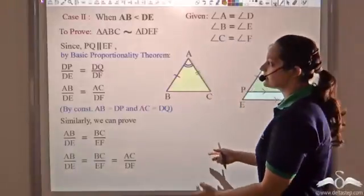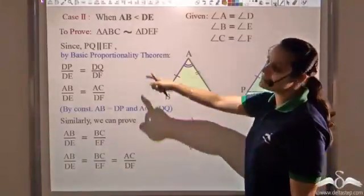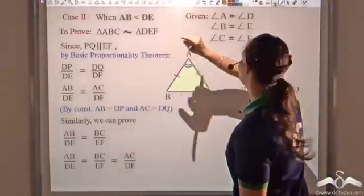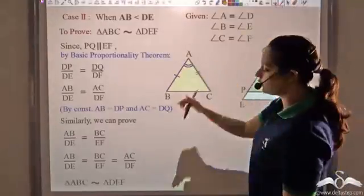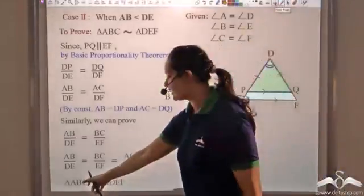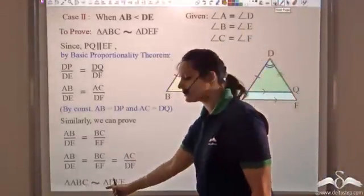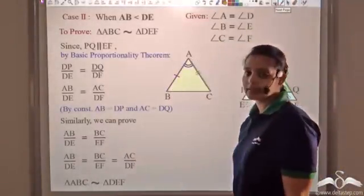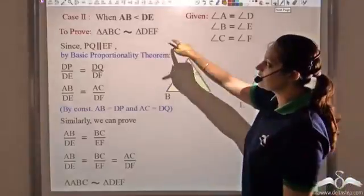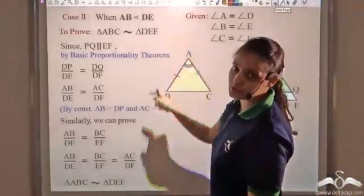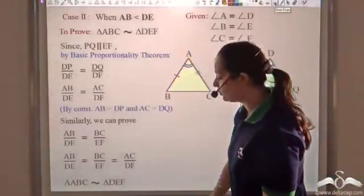Since we were given that the corresponding angles are equal and we have proved that the ratio of corresponding sides is equal, we can say that the triangles are similar. So triangle ABC is similar to triangle DEF. Hence we are done with Case 2.